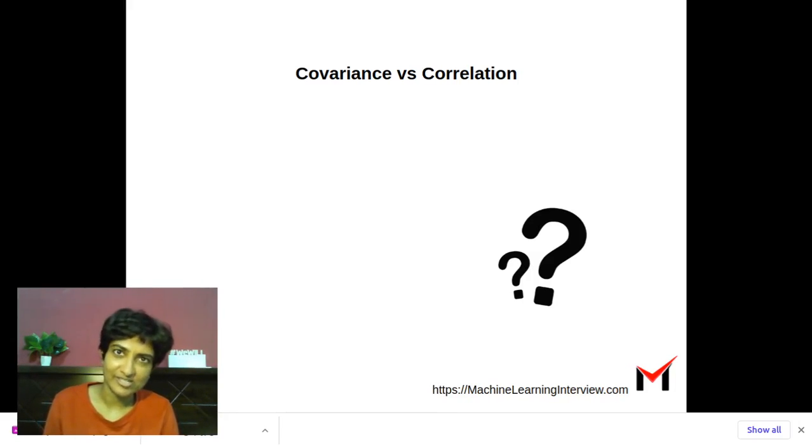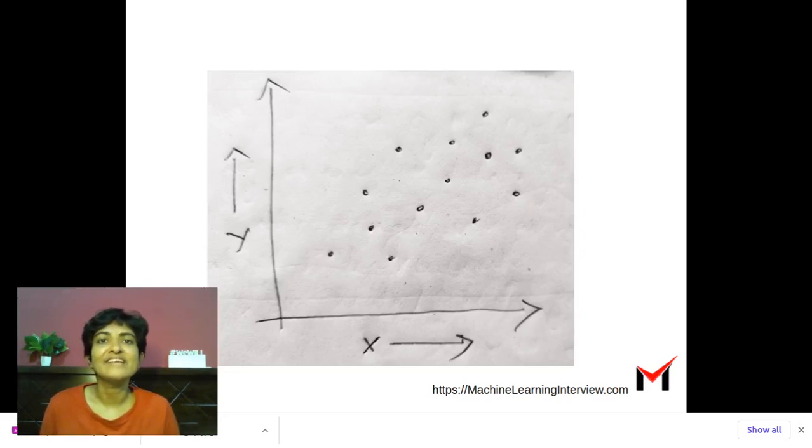Covariance versus correlation. Both covariance and correlation give us some kind of a notion of how one variable is changing with another.